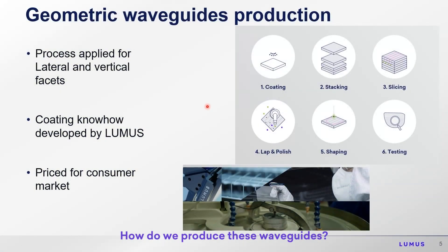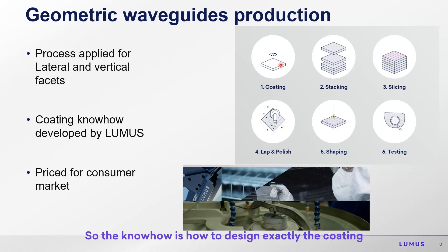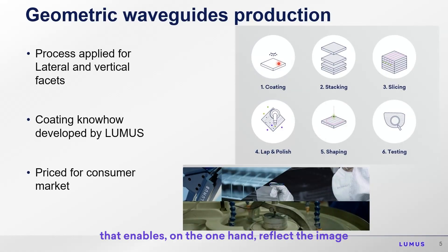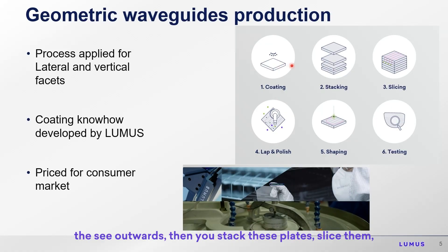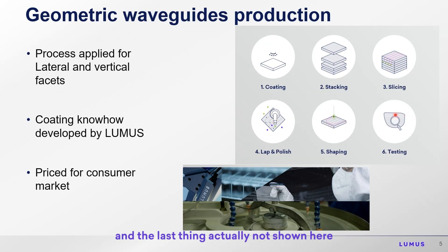How do we produce these waveguides? The know-how is how to design exactly the coating that enables, on one hand, reflecting the image towards the eye, but on the other hand, seeing the scenery outwards. Then you stack these plates, slice them, polish them, and cut the slice into shape. The last step, not shown here, is connecting the projector into this waveguide.